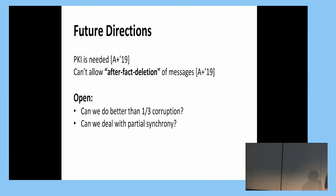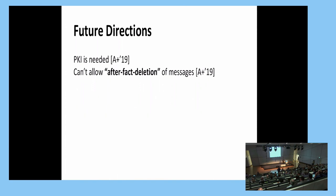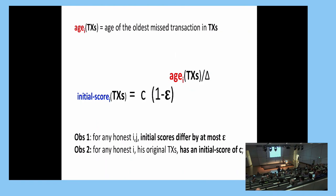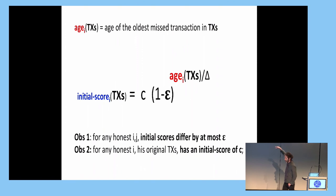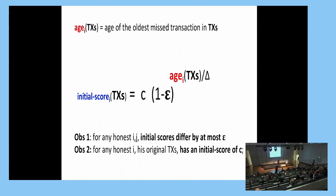A follow-up question asked whether the scoring function needs to be that specific or could be more generic. The speaker confirmed that you just need a function satisfying two key properties: initial scores of honest nodes should not differ much, and old transactions should have their score brought down significantly. Any function with those properties — plus that all transactions are scored low — would work. The session then concluded with thanks.